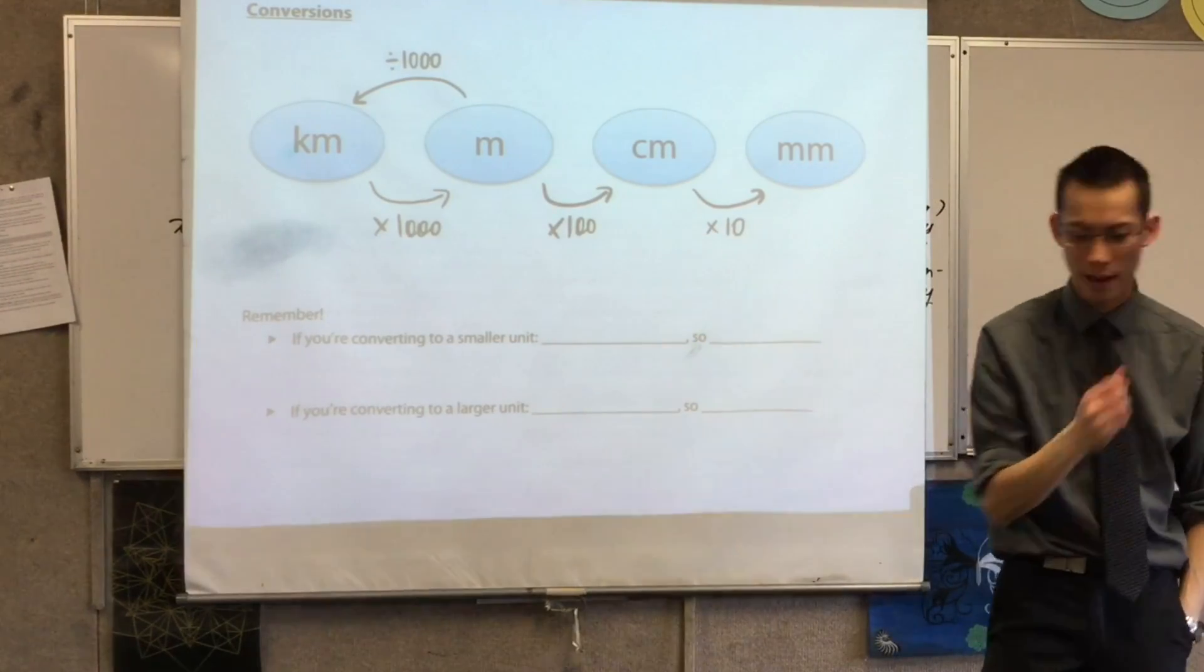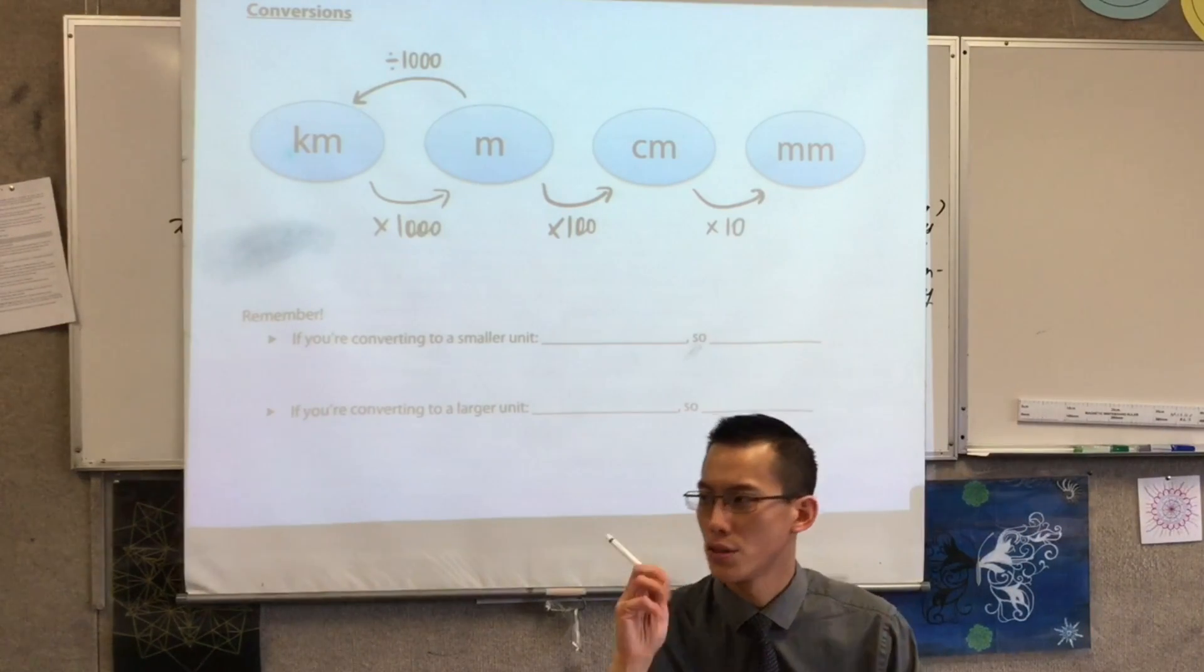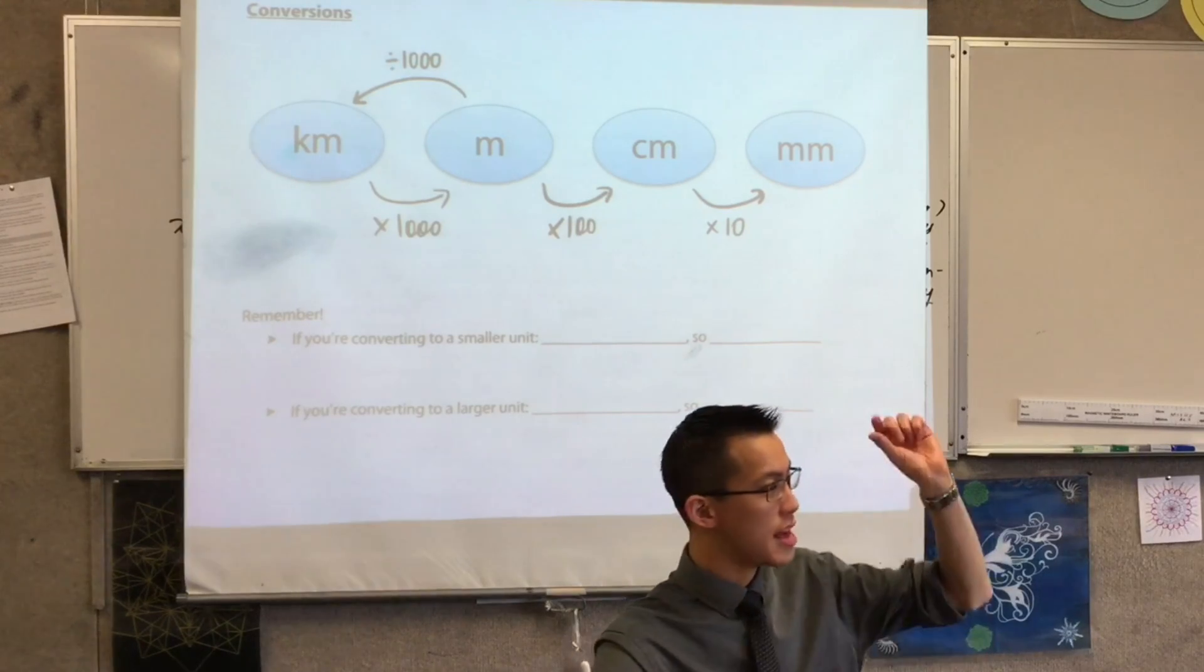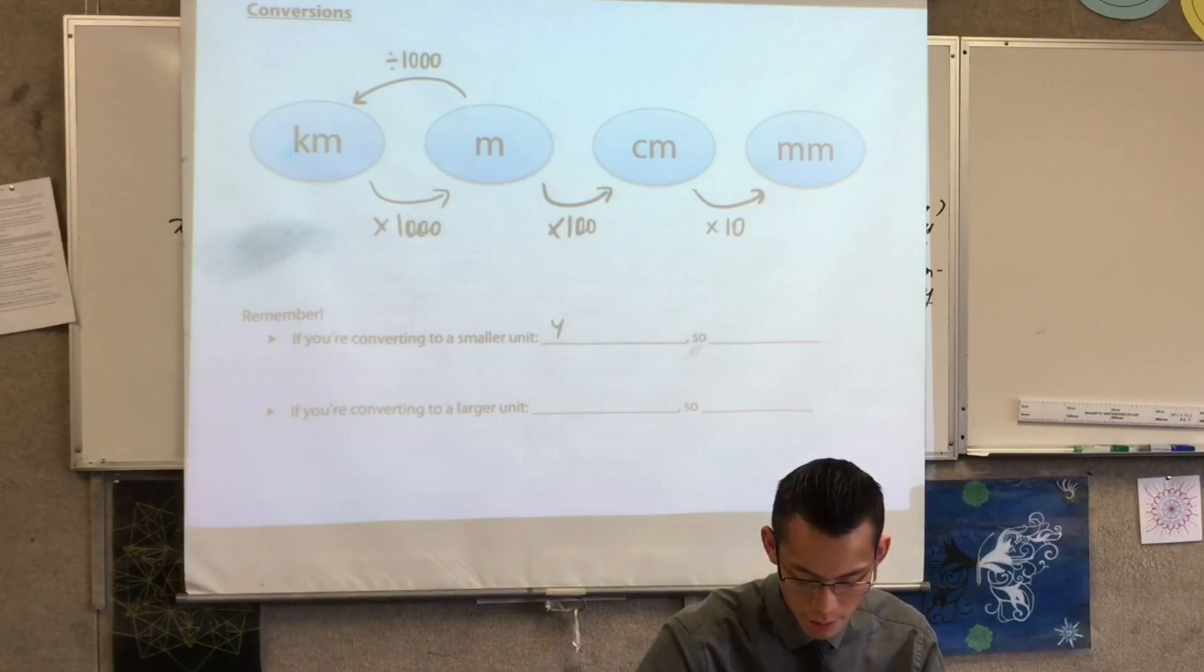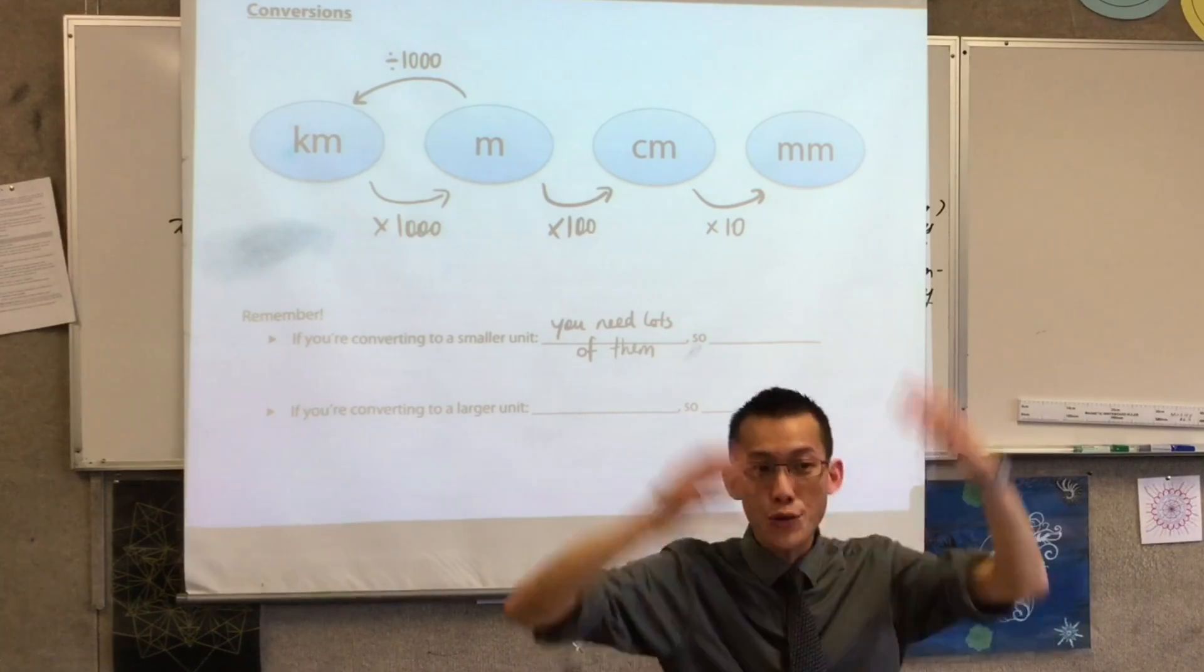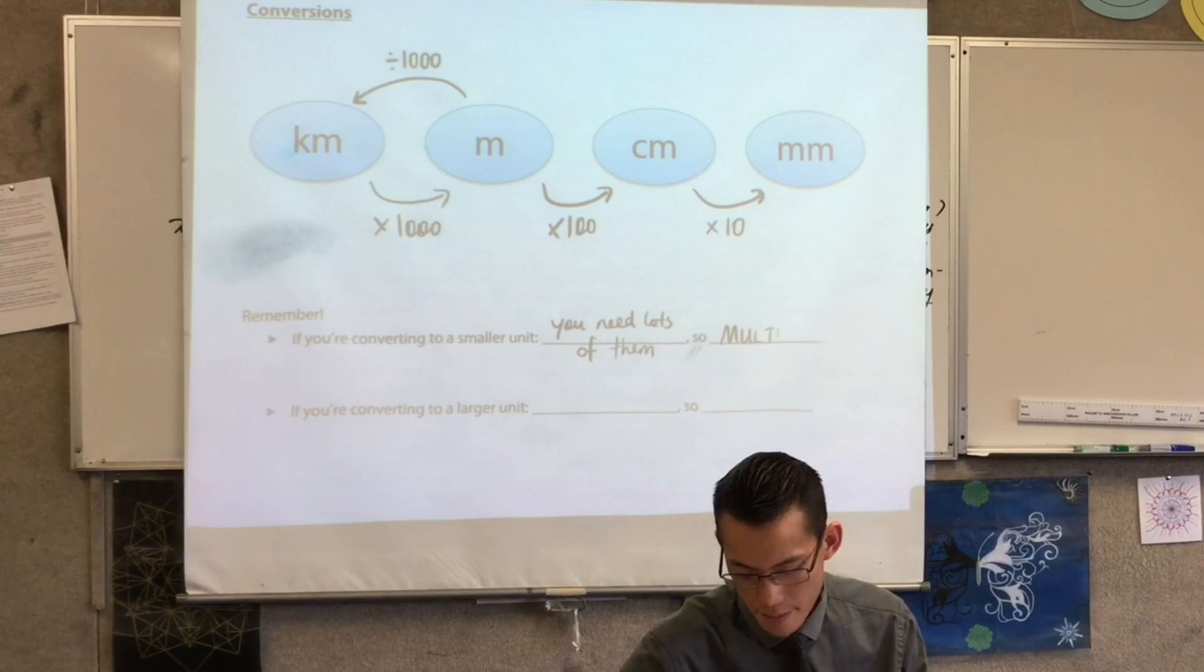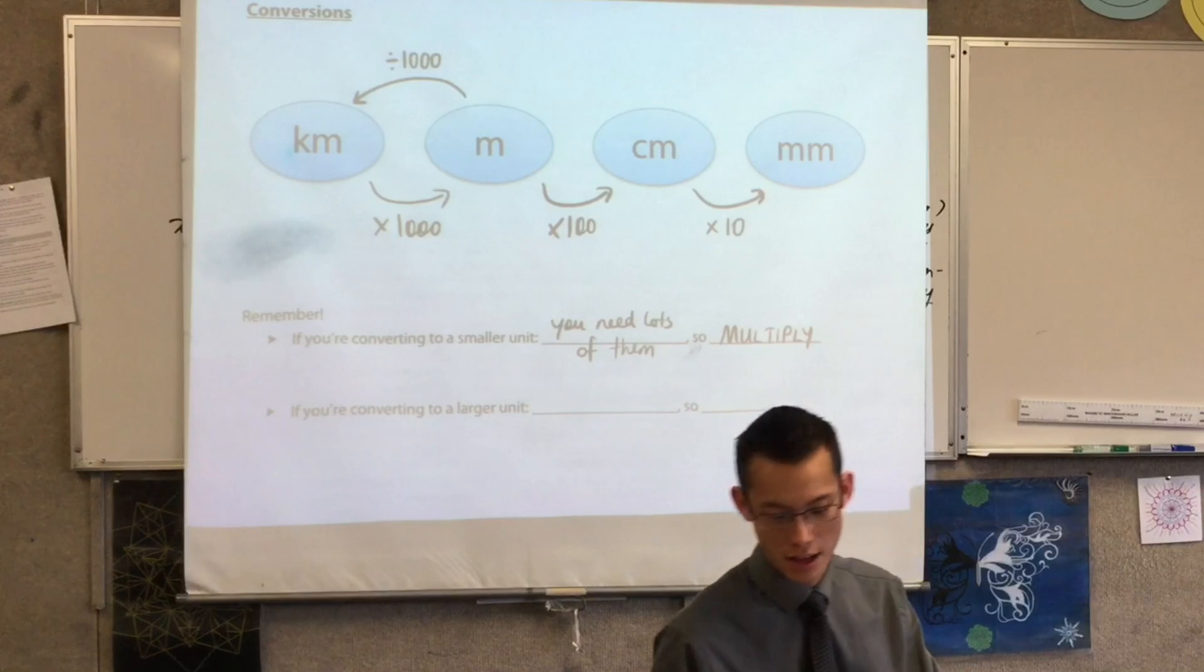Times it. We're multiplying, right? So if you're converting to a smaller unit, what you need to remember is because they're smaller, you need lots of them. So your number is going to get bigger. Like 1.78 turning into 178. So you need lots of them, so multiply. Now, I want you to keep that in mind and then in 2 minutes, tell me how to finish off that next line.